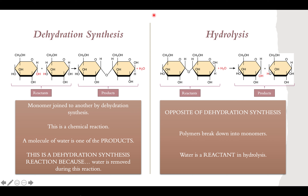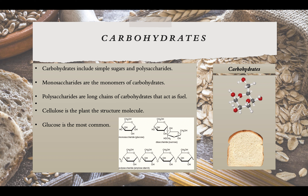If you have any further questions, please reach out — I know this is sometimes confusing for people who haven't taken a lot of chemistry. I'd be happy to break this down further through email. Now let's go deeper into the four types of molecules, starting with carbohydrates. Carbohydrates include simple sugars and polysaccharides, and monosaccharides are the monomers of carbohydrates. Glucose is the most common carbohydrate.